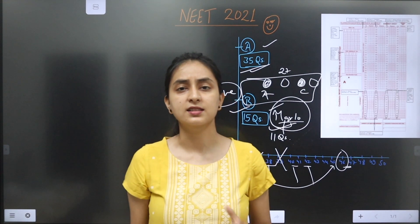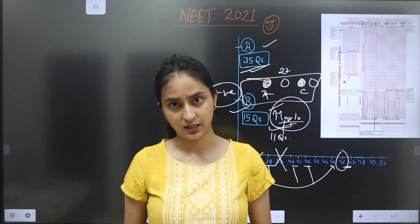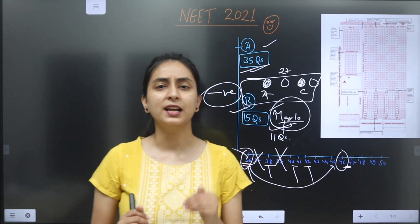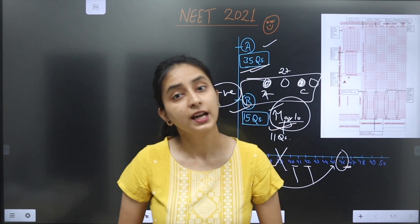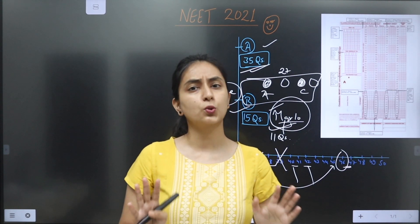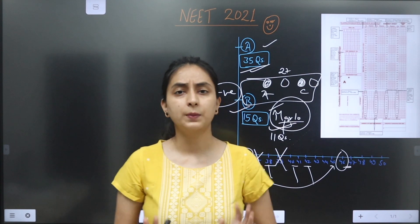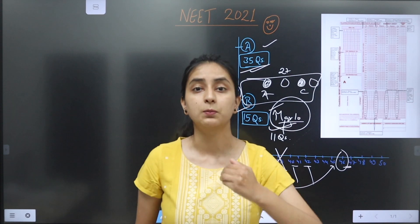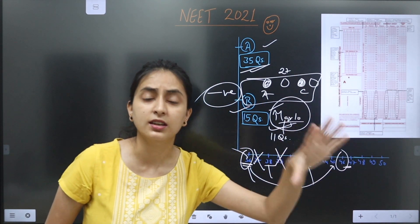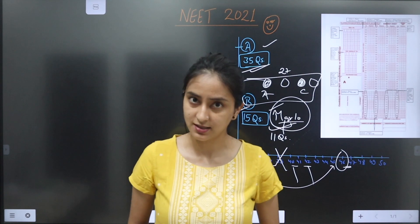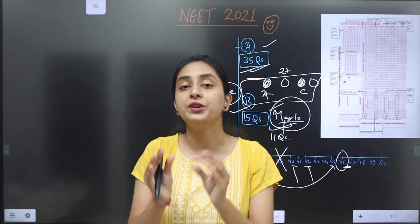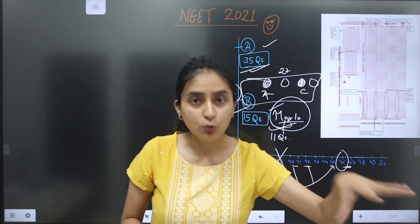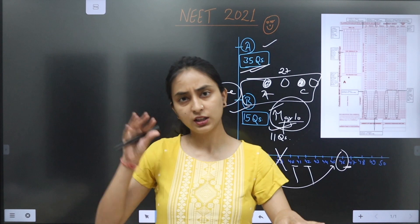Now let's talk about how you should fill bubbles in the OMR sheet. There are 4 sections: Physics, Chemistry, Zoology, Botany. I think you should start with whichever section is strong — either Botany or Zoology. Like, I prefer Zoology, so I would start with Zoology because my questions will be completed quickly, saving time for the calculations in Physics and Chemistry.